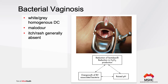In bacterial vaginosis, the patient has a white or whitish-grey homogenous discharge that is very runny. When you put the speculum in, the discharge pools in the lower blade of the speculum. It also has a very fishy smell, with very little itch or rash associated. The odour is due to the reduction of lactobacilli and reduction in hydrogen peroxide production because of an overgrowth of bacteria, which raises the pH.